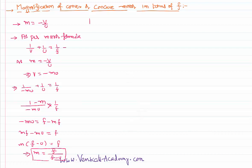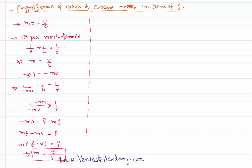So I can write a formula for the magnification as f by (f minus u). This is one formula we can use when we know the values of u and f. Now suppose I don't know u but I know v — I will use the same mirror formula approach.